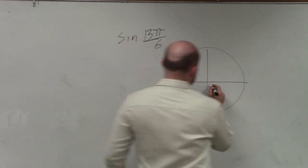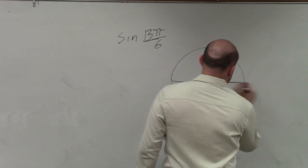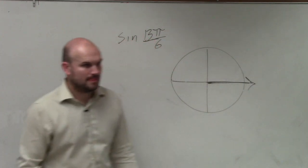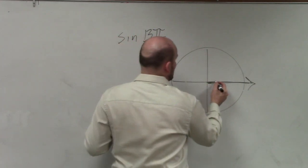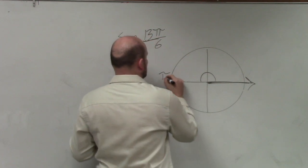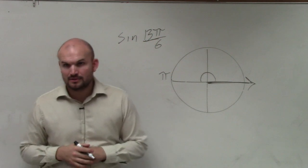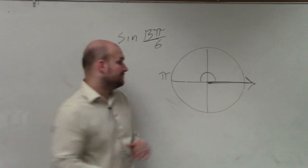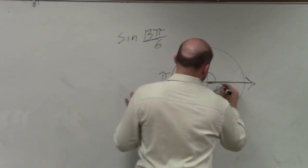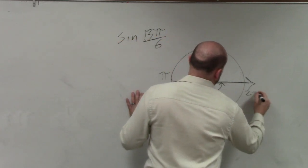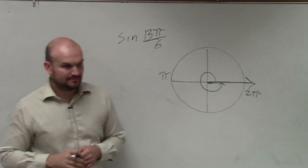So we know that this is our initial side, correct? And we know if we rotate an angle halfway around a circle, that is pi. Correct? If we go all the way around the circle, that's 2 pi. Correct? Yes. OK.